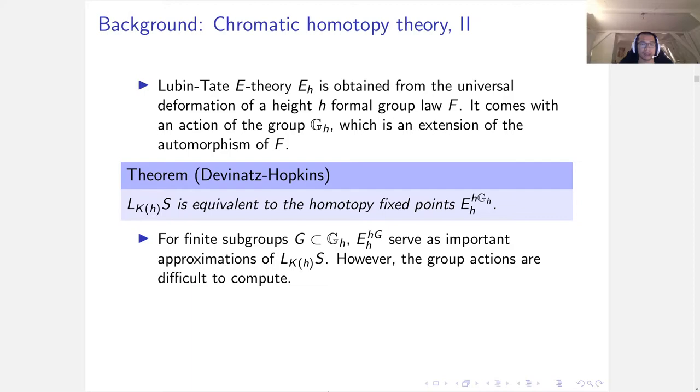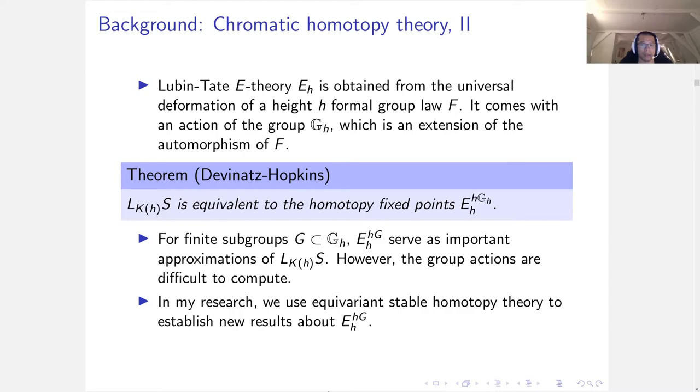For finite subgroups of the Morava stabilizer group, its homotopy fixed point is an important approximation of the K(h)-local sphere. However, the group actions are very difficult to compute. In my research, we use equivariant stable homotopy theory to establish new results about the group action.